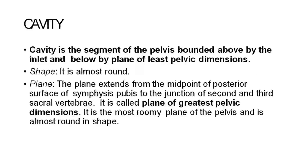Cavity: The cavity is the segment of the pelvis bounded above by the inlet and below by the plane of least pelvic dimensions. The shape is almost round. The plane extends from the midpoint of the posterior surface of the symphysis pubis to the junction of the second and third sacral vertebrae. It is called the plane of greatest pelvic dimensions, and it is the most roomy plane of the pelvis.